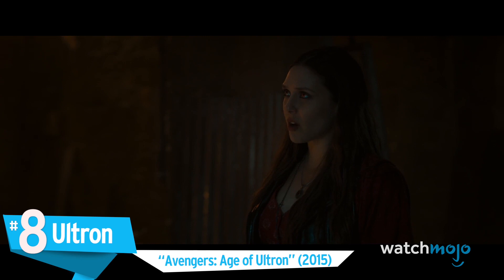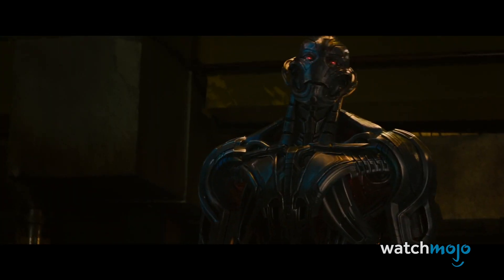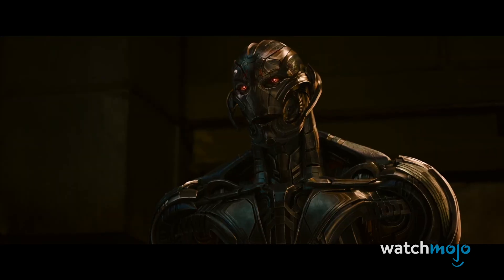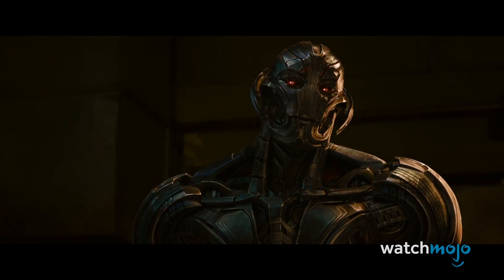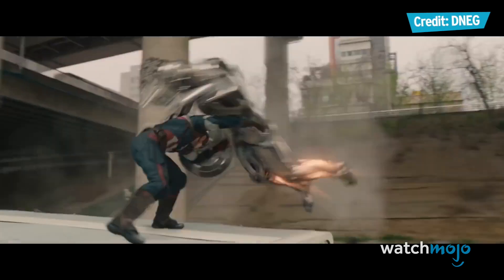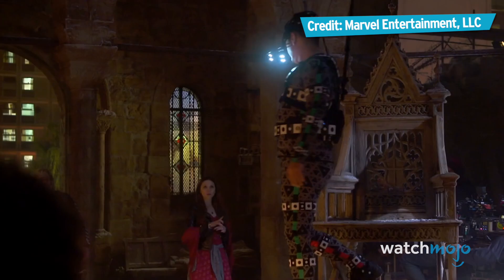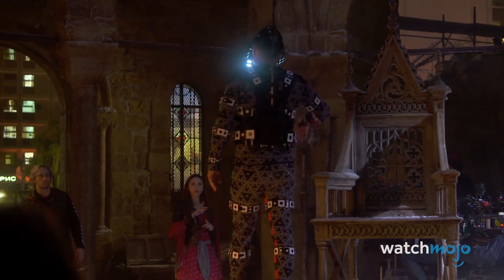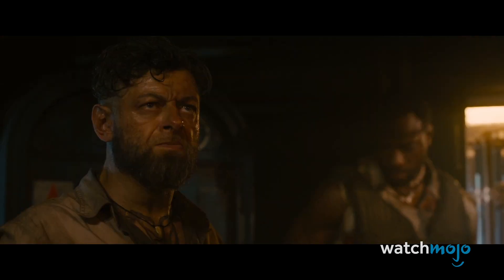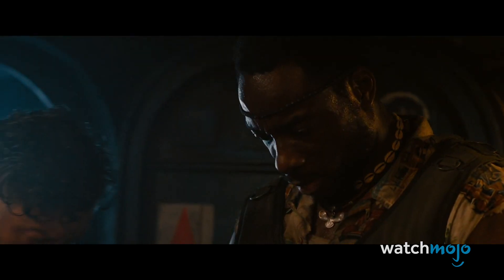Ultron, Avengers: Age of Ultron. An artificial intelligence created by Tony Stark to protect the world, Ultron sees protecting the world differently than his creator, believing the world would be much better off without humans in it. Ultron has a plethora of robot bodies that he inhabits, but his primary form is created via motion capture by James Spader, who evokes a powerful menace that's augmented by effects that bring the mechanized villain to life. Ultron's terrific presence, great look, and his sarcastic personality make him a CGI character that's captivating and fun to watch.